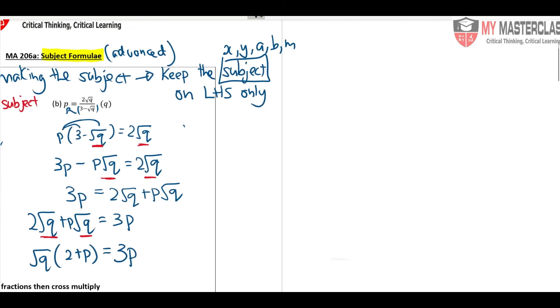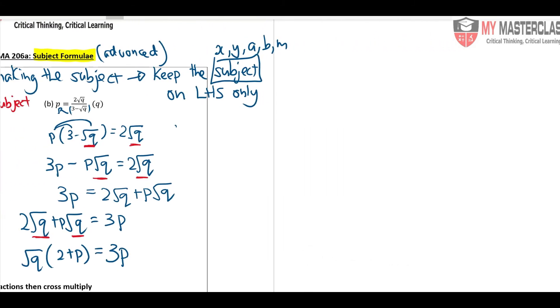Got it? Okay, but it's not done yet. So if I want square root Q only, then what do I do with this 2 plus P? I divide to the right side.